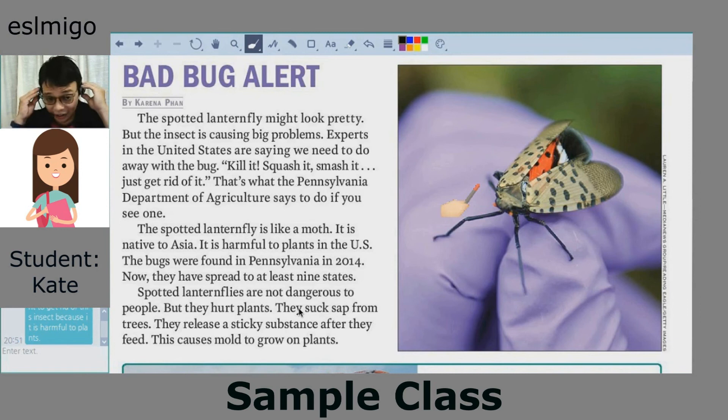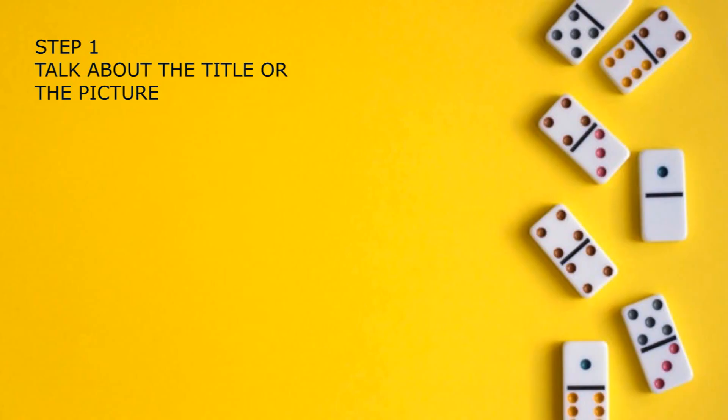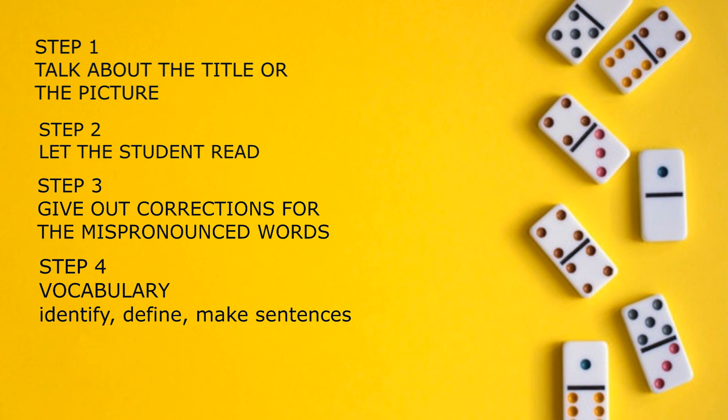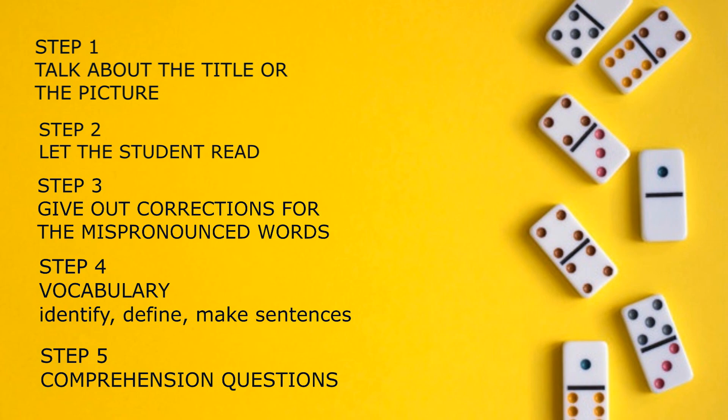I think I have to go now. I'll see you soon. Bye-bye, Miss Kate. So that was the sample class. Let's do a little recap for the easiest but most effective teaching pattern for an ESL teacher: Step one, talk about the title or the picture. Step two, let the student read. Step three, give corrections for the mispronounced words. Step four, vocabulary words — identify, define, then make sentences. And step five, comprehension questions. I hope that can help you guys out. And that is it for me. Peace.